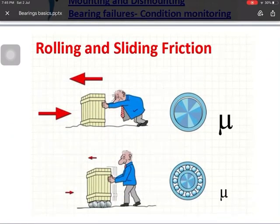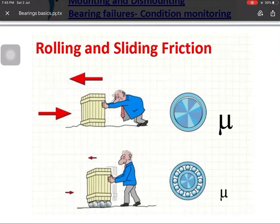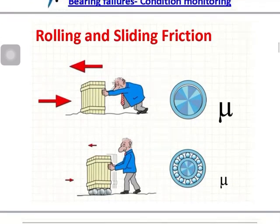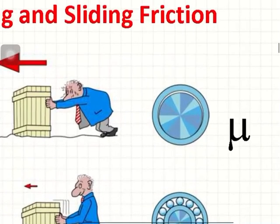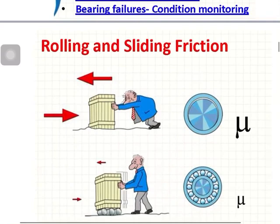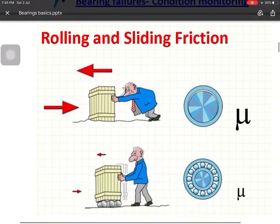In any system we have two types of friction — sliding friction and rolling friction. Sliding friction is always higher than rolling friction. In journal bearings the friction is sliding friction, whereas in anti-friction bearings the friction is mainly rolling friction.